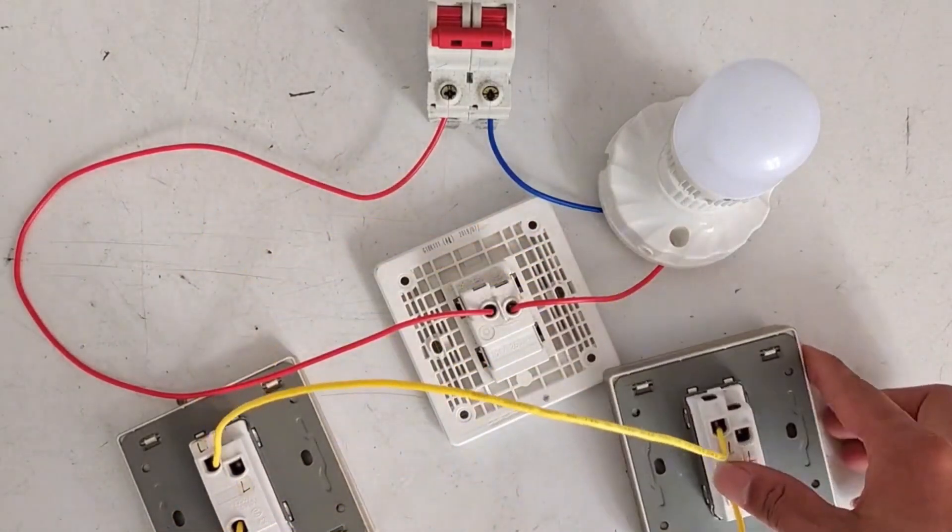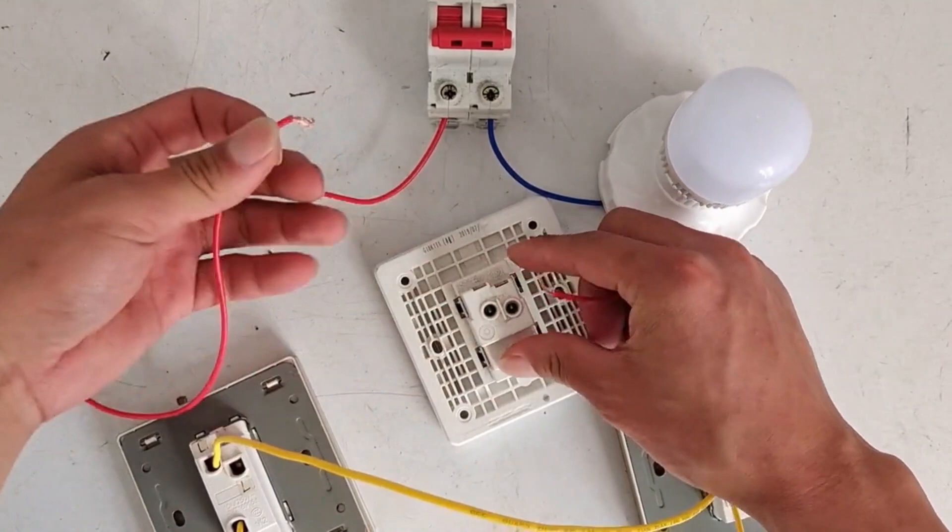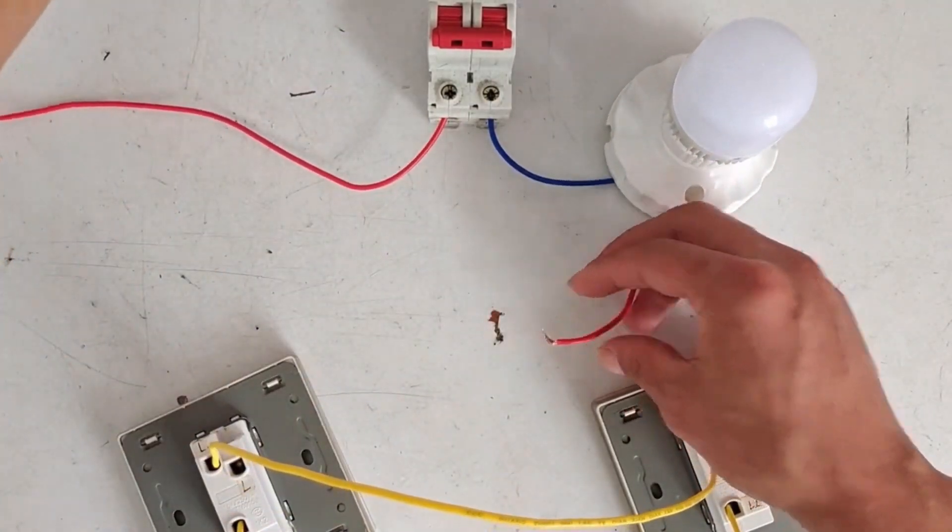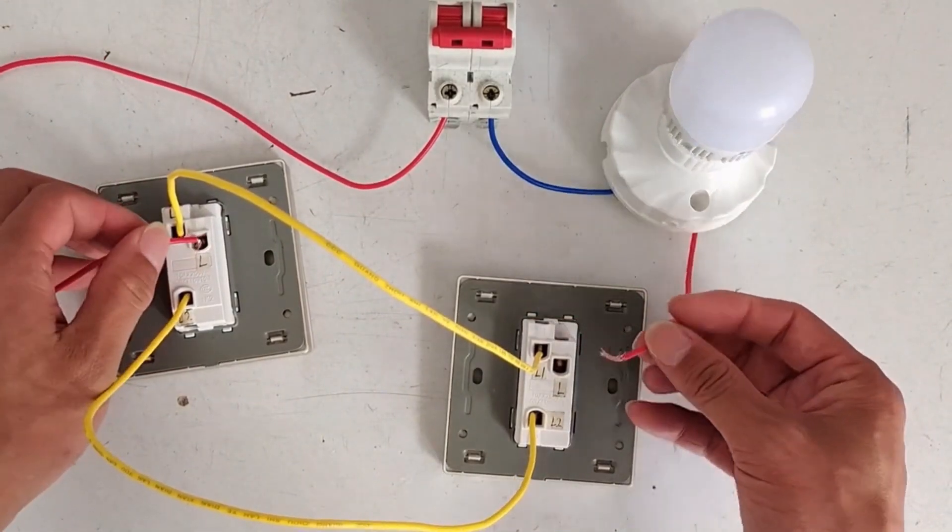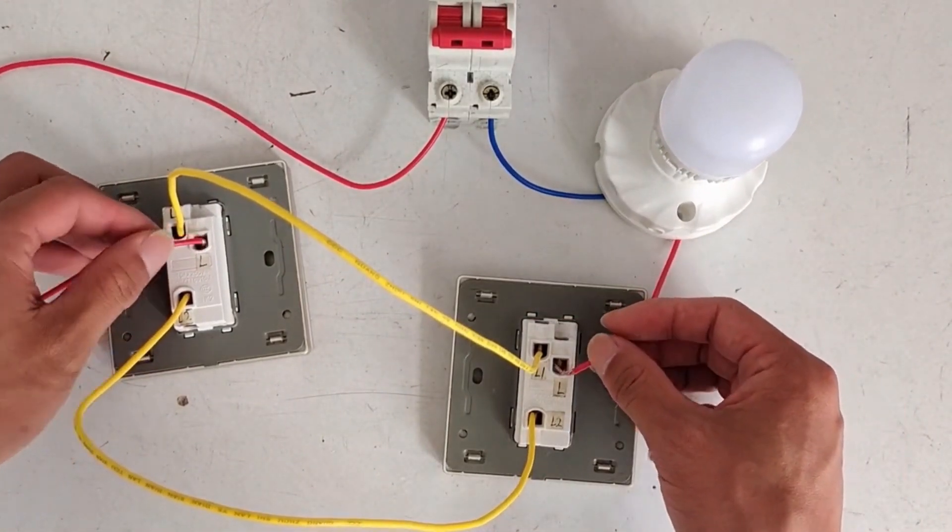Remove the fire wire and the control wire from the lamp. Connect them to the common terminals of the two switches. Connect the fire wire to L. The control wire is also connected to L.